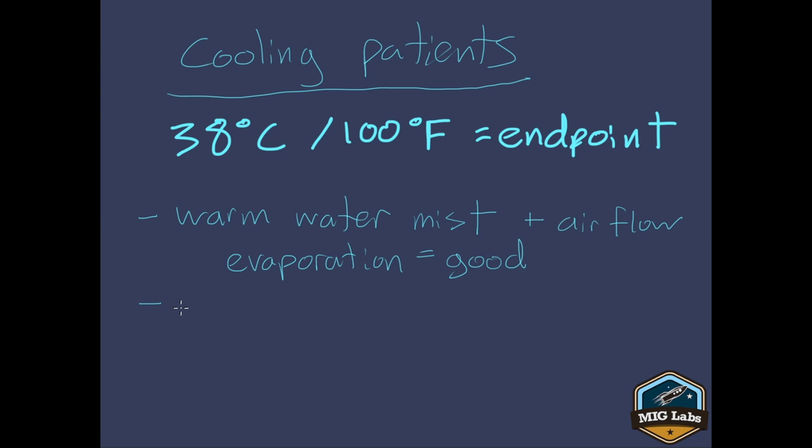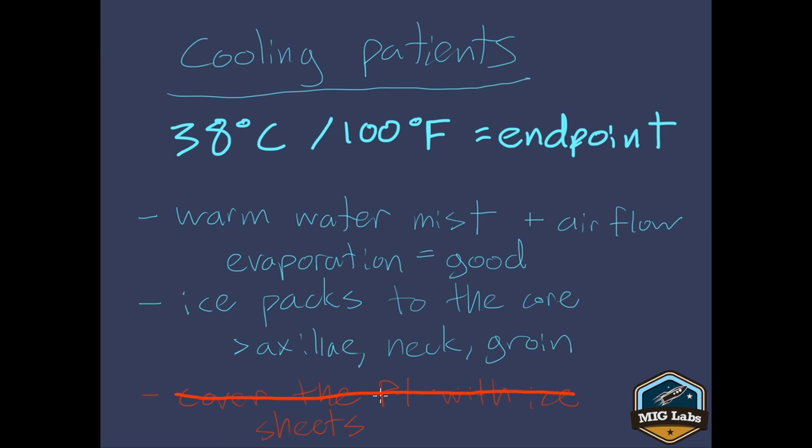Another method is you can use ice packs or even just ice. But like we said, you can cause some vasoconstriction in the extremities and you can cause shivering. So you only want to put these against the core of the patient's body. When we say core, we're talking about the armpits, the axilla, the neck, and the groin. That's where you get some very large vessels, a lot of blood flow, and so you can have the most benefit. It's generally recommended that you do not cover the patient with ice sheets or cold wet blankets. The reason for that is like we talked about, when you cool off the extremities, you cause a vasoconstriction. So you stop the heat transfer and you can trigger the body to start shivering, which is going to increase the heat production. Most people recommend you do not cover the patient with ice sheets.